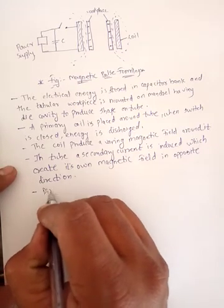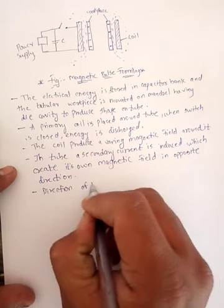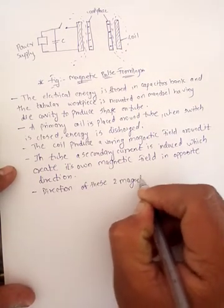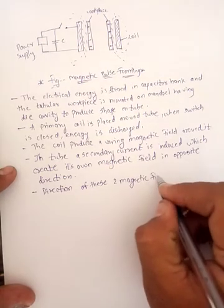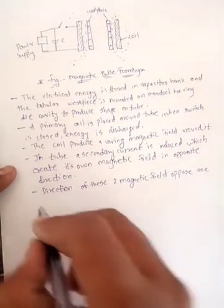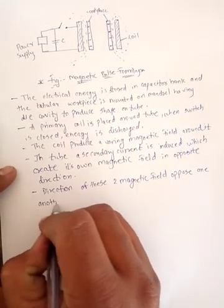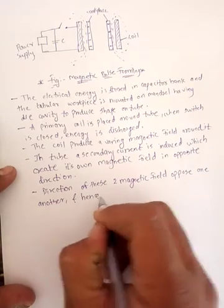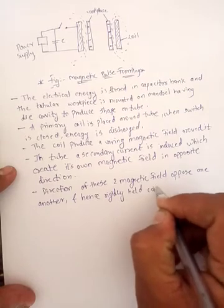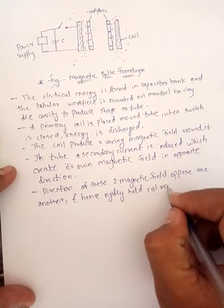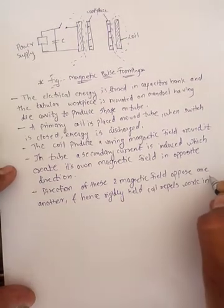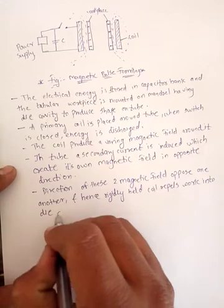The direction of these two magnetic fields opposes one another and hence rigidly held coil repels work into die cavity.